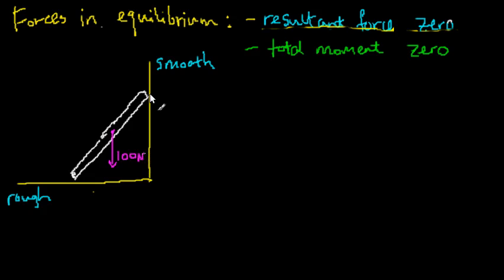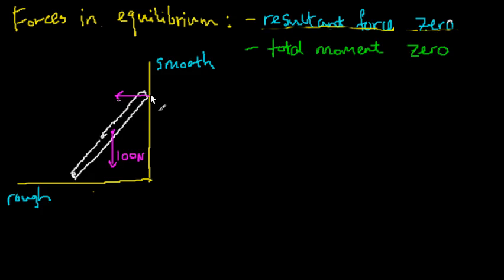At the wall, since there's no friction, there are no forces along the wall direction. The only force possible is one perpendicular to the wall. This force has to be perpendicular because if it had a component along the wall, that could only come from friction — but there's no friction on the wall.